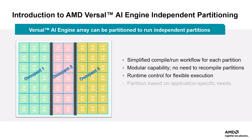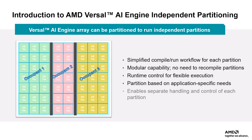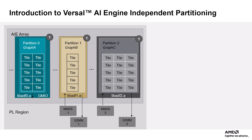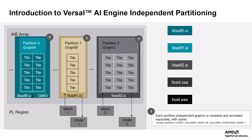The AI Engine array needs to be partitioned based on specific user requirements, providing more fine-grained control over how workloads are distributed across the system. By handling each partition separately, users now have modular control, making the development process more efficient and flexible. This is achieved by creating independent graphs that can be compiled and simulated separately. Each graph is assigned to a specific column or a contiguous block of columns in the AI Engine array. Once compiled, the V++ linker combines these partitions, ensuring no overlap in resource usage — a critical aspect for maintaining a stable and efficient design.